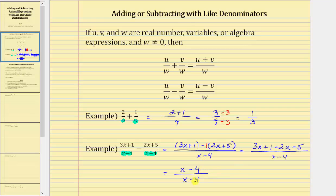Notice how this does simplify because we have a common factor of x minus four between the numerator and denominator. Before we simplify, notice how the denominator would be equal to zero when x is four, so x can't equal positive four. Simplifying, x minus four divided by itself simplifies to one. So the given difference is one as long as x doesn't equal four.